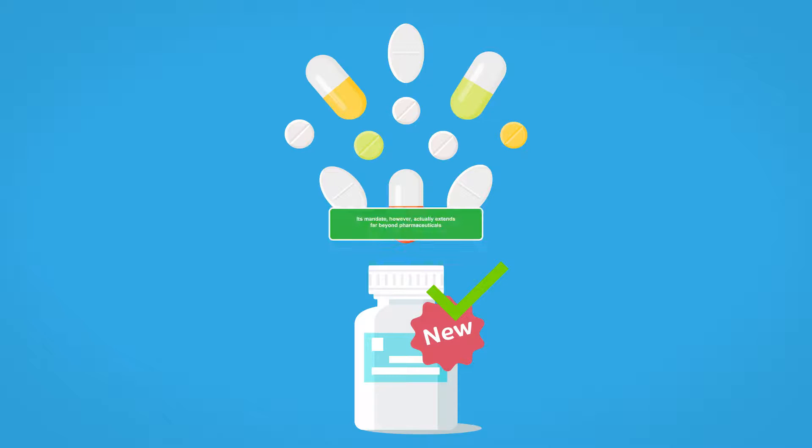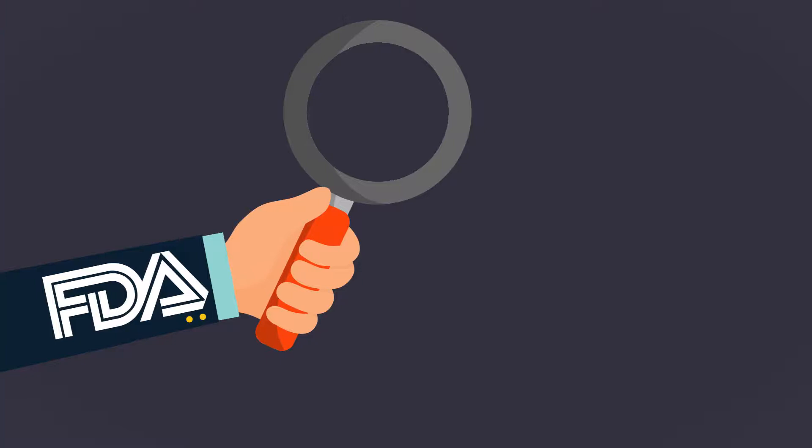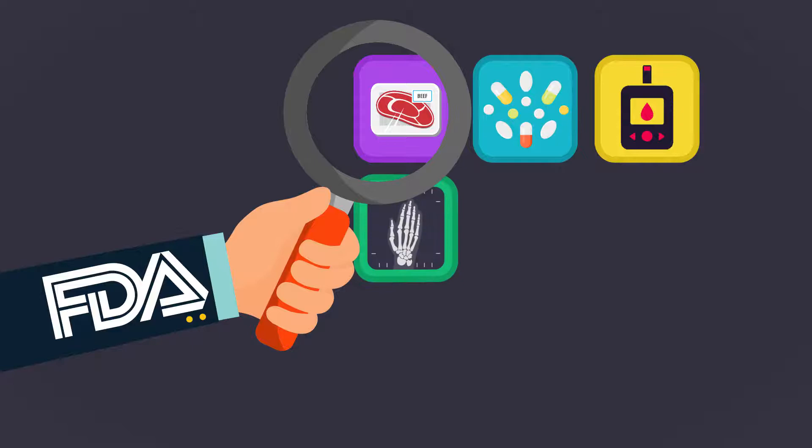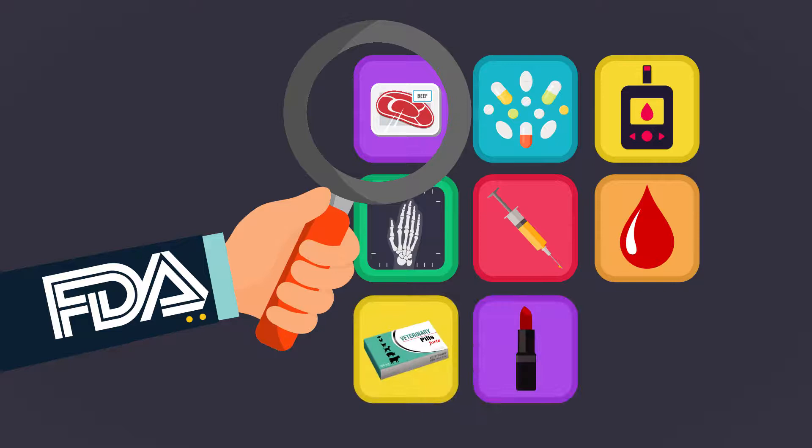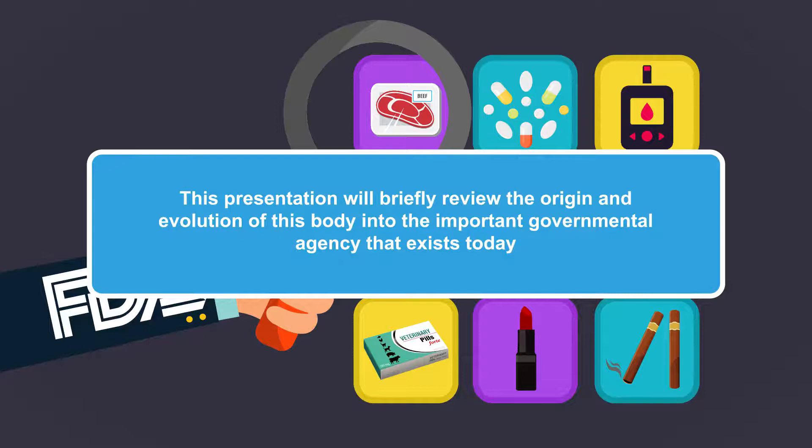The FDA is most commonly thought of in the context of approval of new drugs. Its mandate, however, actually extends far beyond pharmaceuticals. It's responsible for approval and oversight of a broad range of products, including food, drugs, medical devices, radiation-emitting products, vaccines, blood and biologicals, veterinary products, cosmetics, and tobacco products.